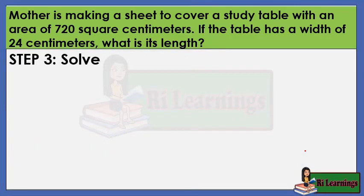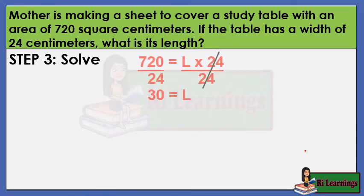Step 3: Solve. Divide both sides by 24. 720 divided by 24 equals 30.